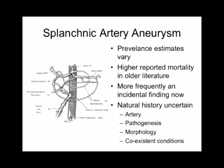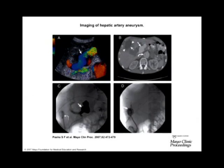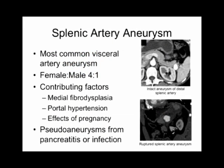The natural history is uncertain and depends on which artery is involved and the pathology: atherosclerotic or degenerative aneurysm, fibromuscular dysplasia, a young woman who might be pregnant, or a 70-year-old with a calcific aneurysm. Morphology, shape, calcification, and co-existent disease all factor in. The distribution: splenic artery represents about 60% of visceral artery aneurysms, hepatic about 20%, superior mesenteric about 5%, and celiac just under 5%. A variety of imaging techniques can be used including duplex, CT, and angiography. Splenic artery aneurysms are the most common visceral artery aneurysms, representing 60% or more.